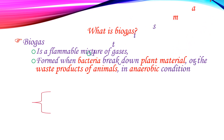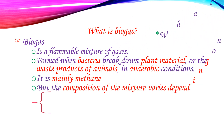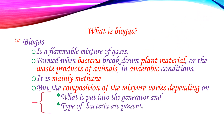So what is biogas? Biogas is a flammable mixture of gases produced in anaerobic conditions. When bacteria break down plant material or the waste products of animals — which might be dung or urine — the condition must be anaerobic.